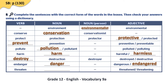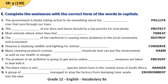The word threaten is a verb which comes from the noun threat. So far we have derived different parts of speech for each entry. Now let's see how we should use the correct word in sentences. After learning how to use suffixes to change parts of speech, let's do exercise C on page 130 in our students book — complete the sentences with the correct form of the words in capitals.